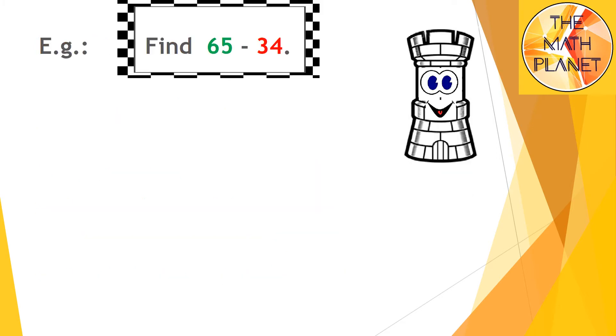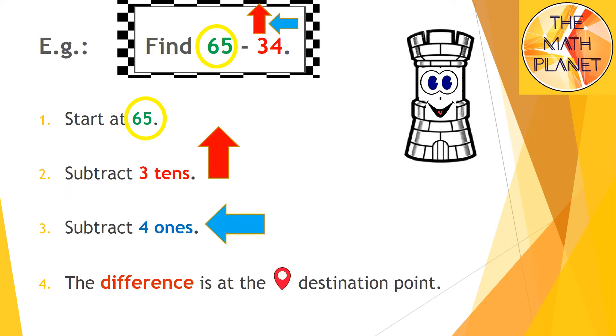Let's apply what we learned on this example: 65 minus 34. The start point is 65, then I'll subtract 3 tens by moving up and subtract 4 ones by moving to the left, and the destination will be the answer.